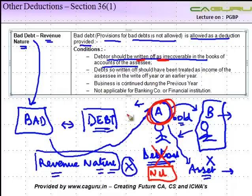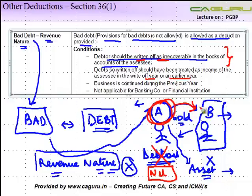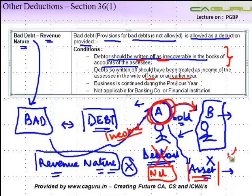There's been a lot of debate and controversy around this, but let's go with this much only. Debts so written off should have been treated as income of the assessee in the current year or an earlier year. When you sell goods you book this amount as income, whereas when you sell an asset below the price at which it stands in your books, it is not shown as income but as a capital receipt. So in order to claim a bad debt, the debt so written should have been treated as income of the assessee.